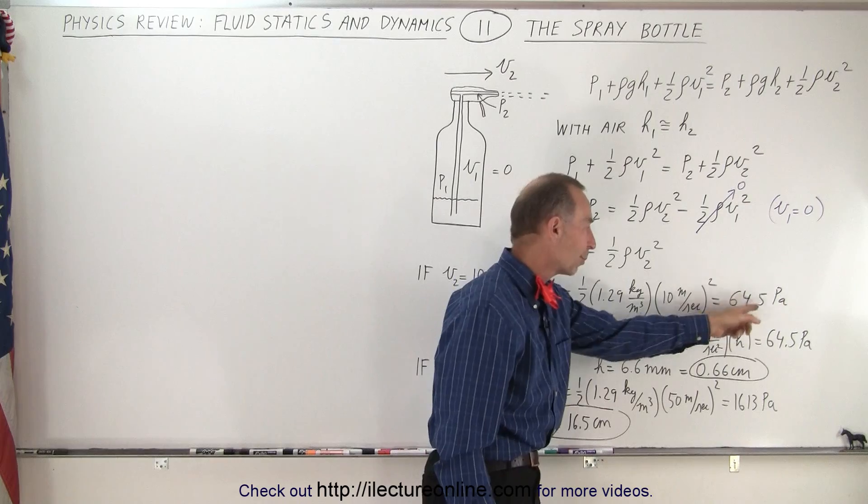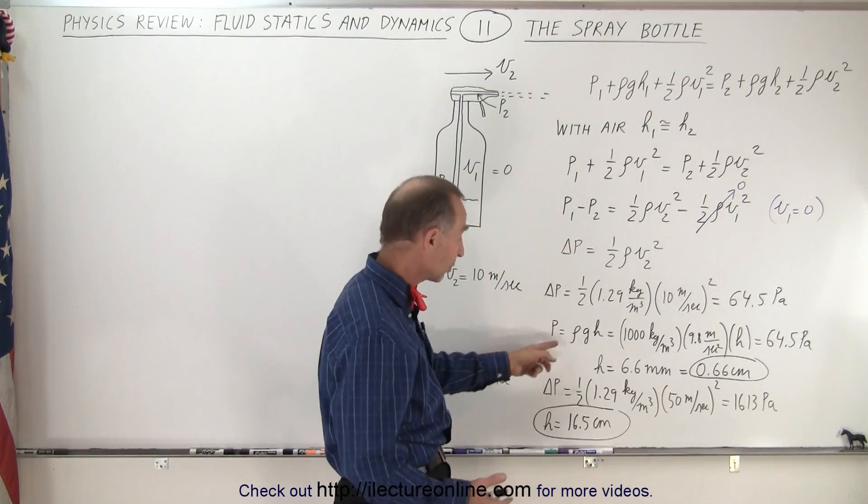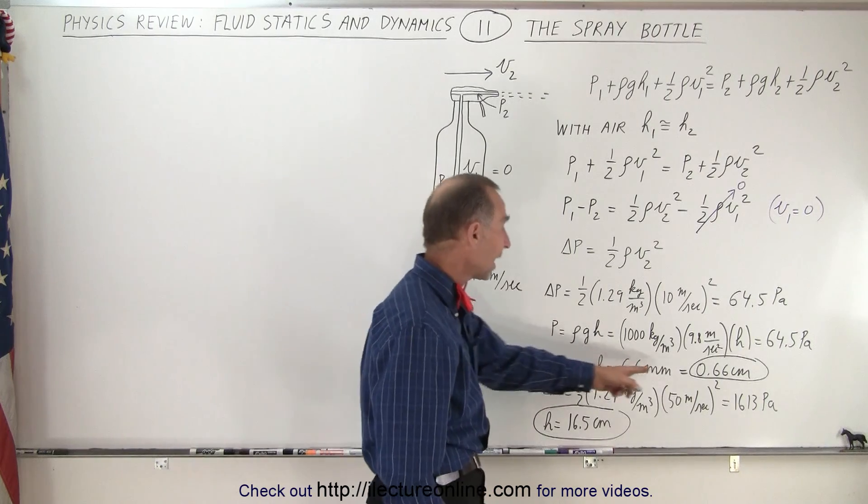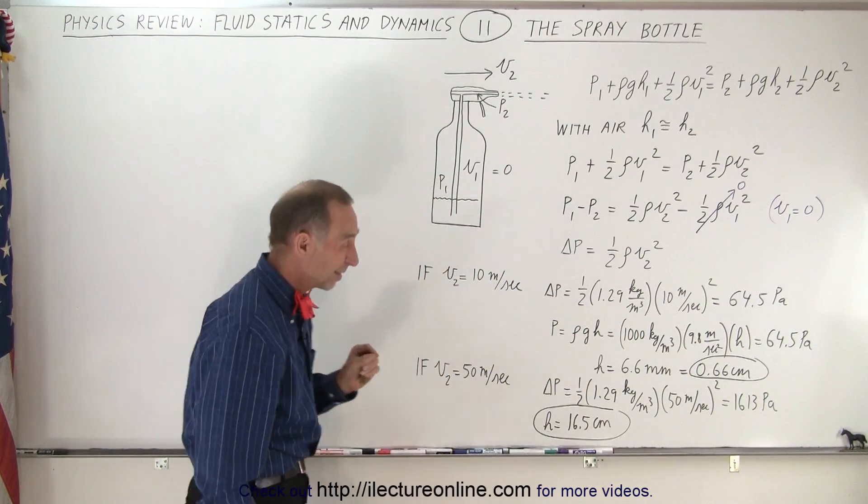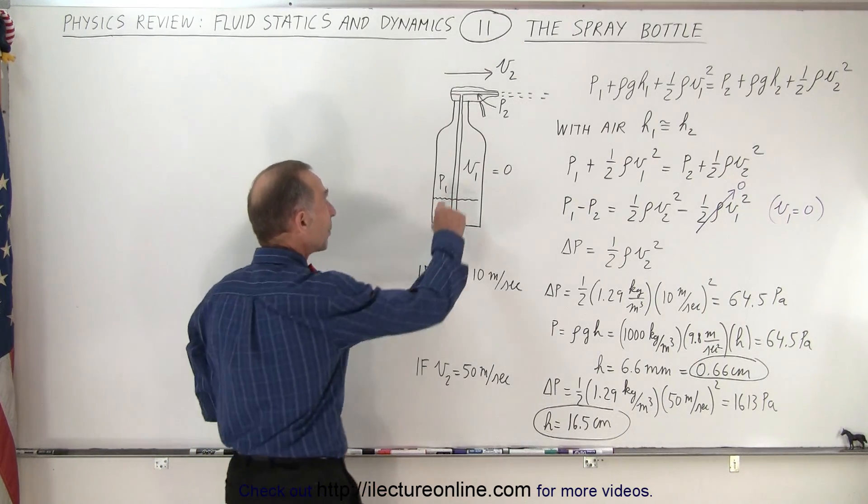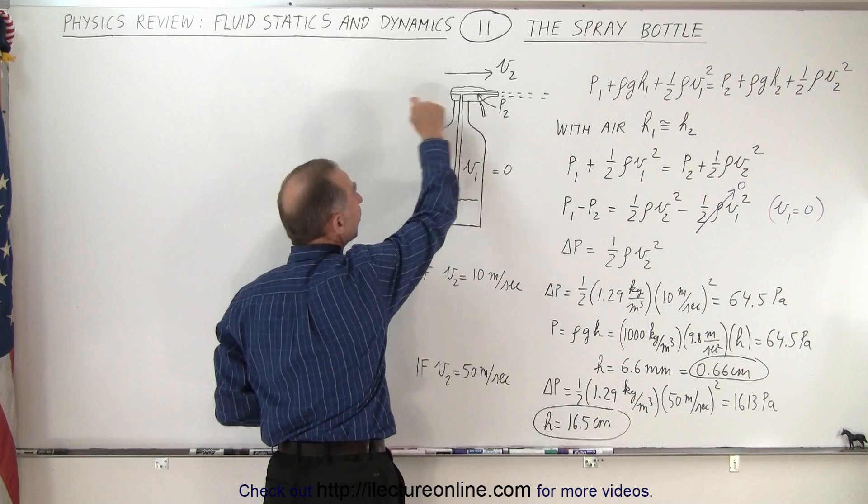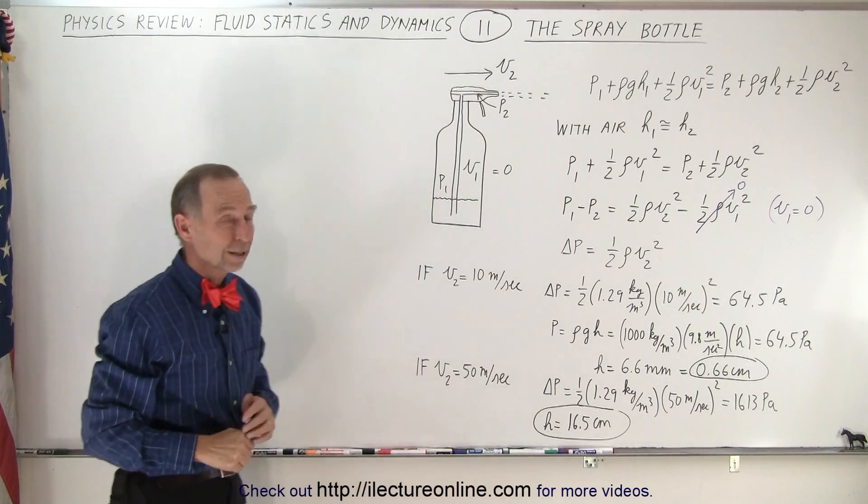If you then compare that to the pressure in a fluid which is rho GH, you can see that the height difference is only 0.66 centimeters, almost 7 millimeters. In other words, you can only bring the fluid up about 7 millimeters if the velocity of the air through the tube up there is 10 meters per second.